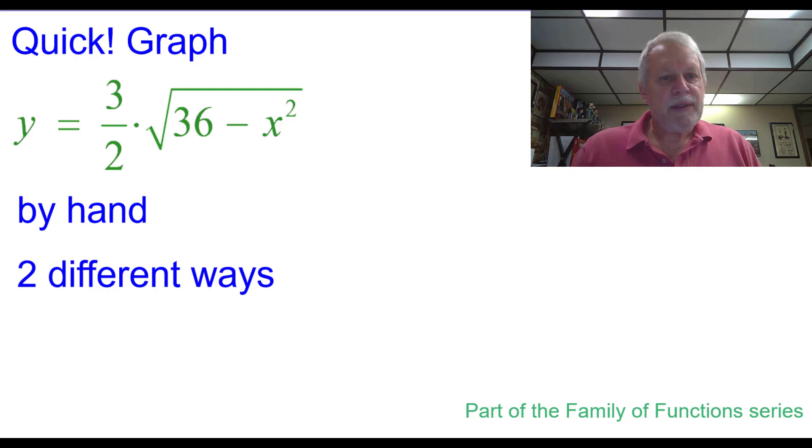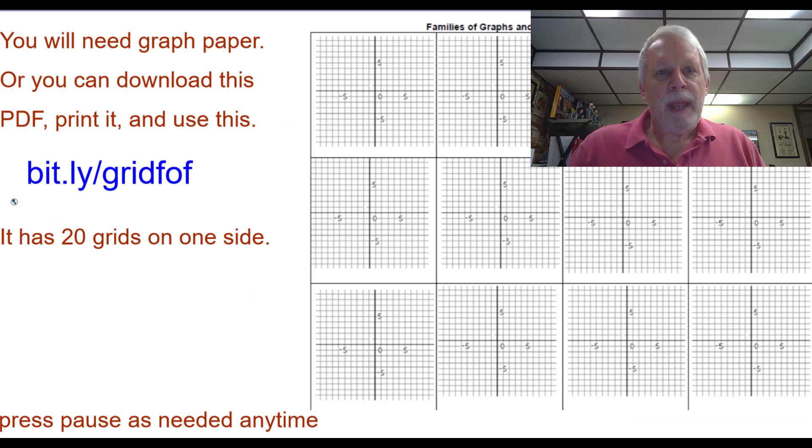Quick, graph y equals three-halves times the square root of the quantity 36 minus x squared by hand, two different ways. This is part of the family of functions series. You will need graph paper, or you can download this PDF and print it. Press pause as needed any time.